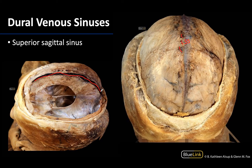Note that in this particular dissection the sinus has been opened, so that's why it looks so dark here. Running the length of the falx cerebri, it ultimately drains into the confluence of sinuses, which is going to be located superior lateral to the internal occipital protuberance. Recall that the falx cerebri actually attaches to the internal occipital protuberance, so it makes sense that it drains right around there — around this area here.